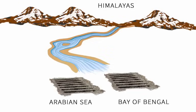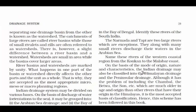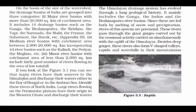The Indian drainage can be classified into two types: Himalayan drainage and peninsular drainage. Many rivers have their sources in the Himalayas and discharge into the Bay of Bengal or Arabian Sea — fed by melting snow and glaciers. Then there are rivers that originate in the peninsular plateau due to rainfall and precipitation.